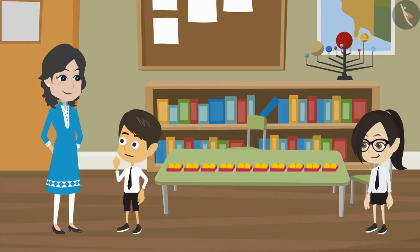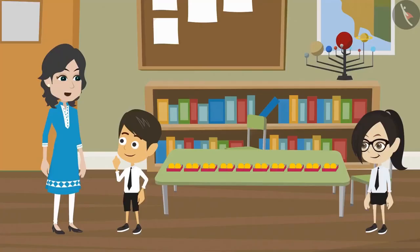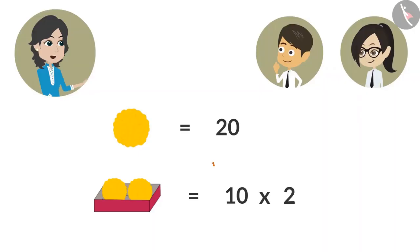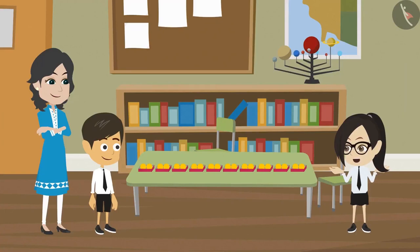How could you find out so soon, madam? We have been counting for a very long time. It's easy. I have multiplied two with the number of boxes. So I got to know that there are twenty laddus in ten boxes. But why did you multiply?